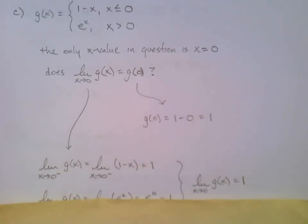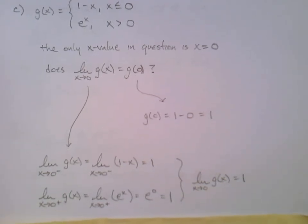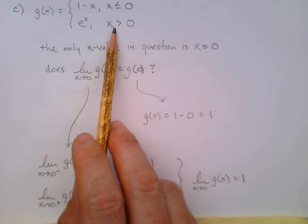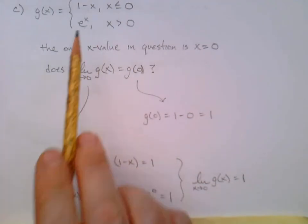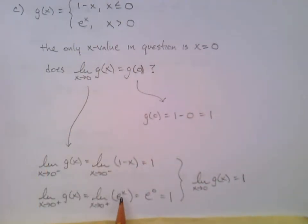Now I need to look at the right side. As x approaches zero from the right side for my function, well then I need to choose the piece where x is a little bit bigger than zero because I'm on the right side. So I'll take e to the x, plugging zero into that. Well hey, isn't e to the zero equal to one as well?